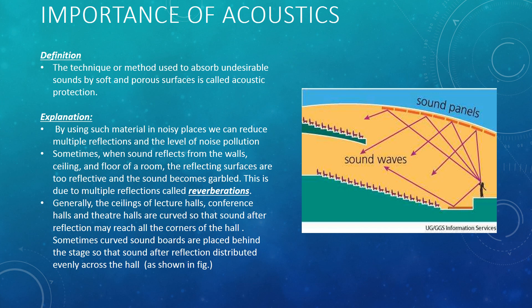In order to avoid reverberations, soft and porous materials are used. The ceilings of lecture halls, conference halls and theatre halls are curved so that the sound, after reflection, may reach all corners of the hall. Sometimes curved sound booths are placed behind the stage so that sound, after reflection, is distributed evenly across the hall. So multiple reflection is beneficial as it distributes sound well across the hall, but sometimes it is not good as it causes noise pollution and disturbs the sound.